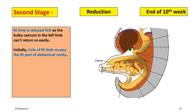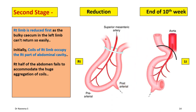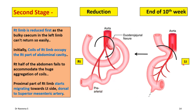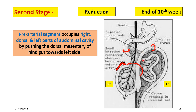Initially, the right limb coils occupy the right half of the abdominal cavity. Later, as the right half fails to accommodate the huge aggregation of coils, the proximal part of the pre-arterial segment starts migrating towards the left side, dorsal to the superior mesenteric artery. The midgut loop lies between the anterior and posterior intestinal portals, reducing through the umbilical ring. As the right limb reduces into the abdominal cavity, it occupies initially the right part, then the dorsal part, then the left part of the cavity by pushing the dorsal mesentery of the hindgut towards the left side.